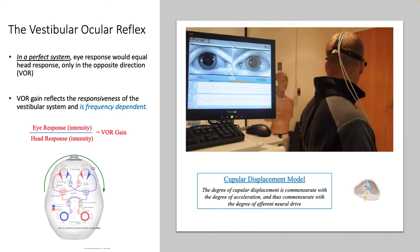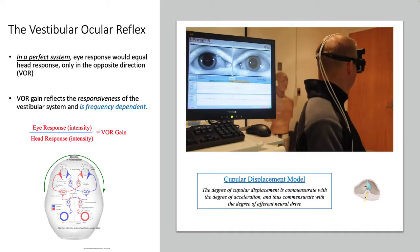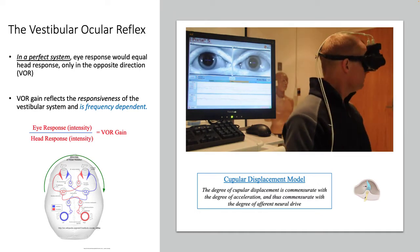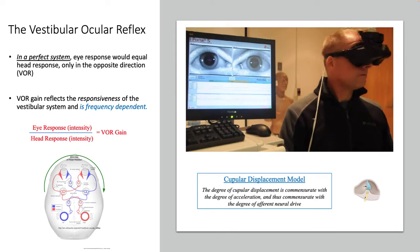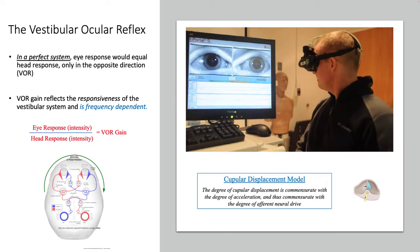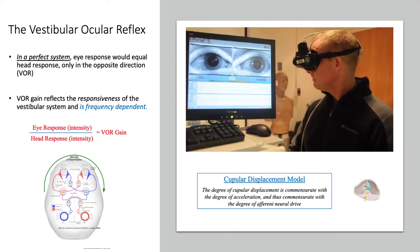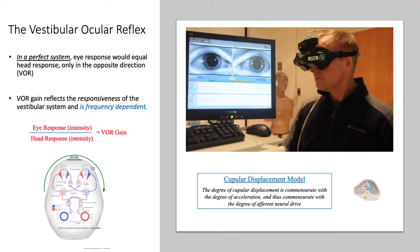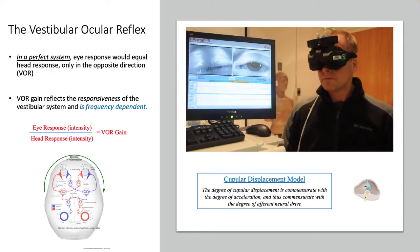As I move my head more briskly back and forth, I get greater cupular displacement, and therefore I get a more robust afferent drive and a more efficient VOR production.